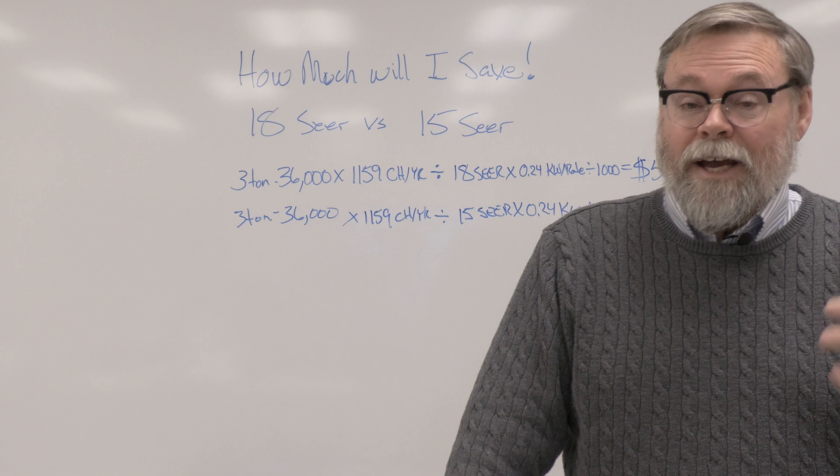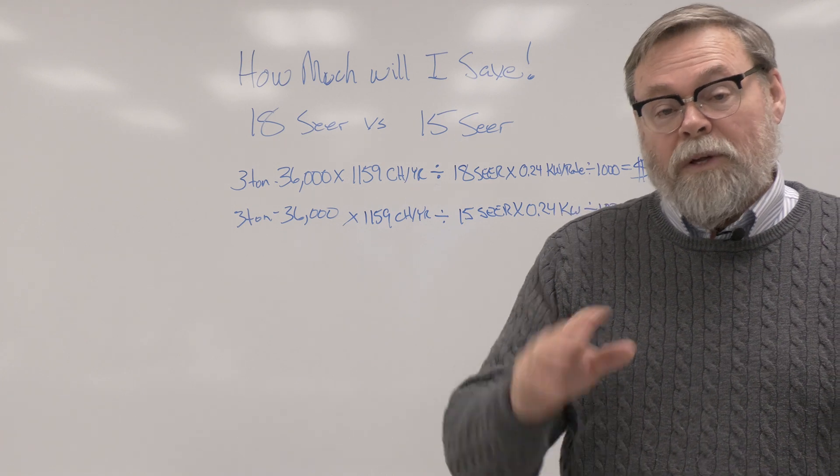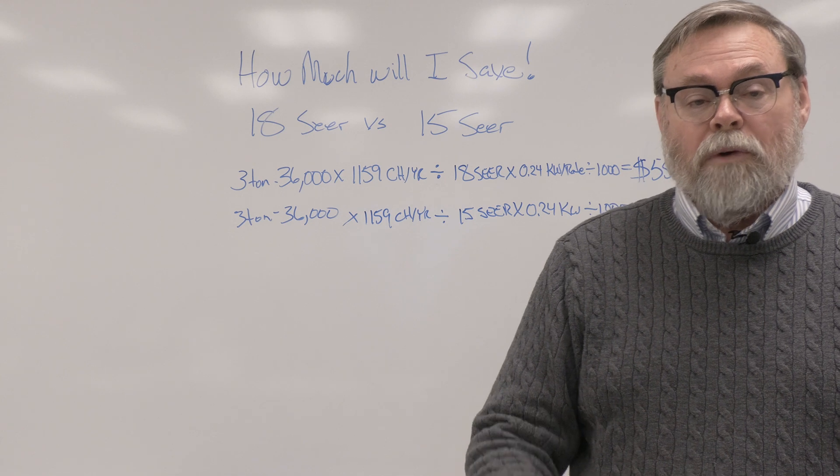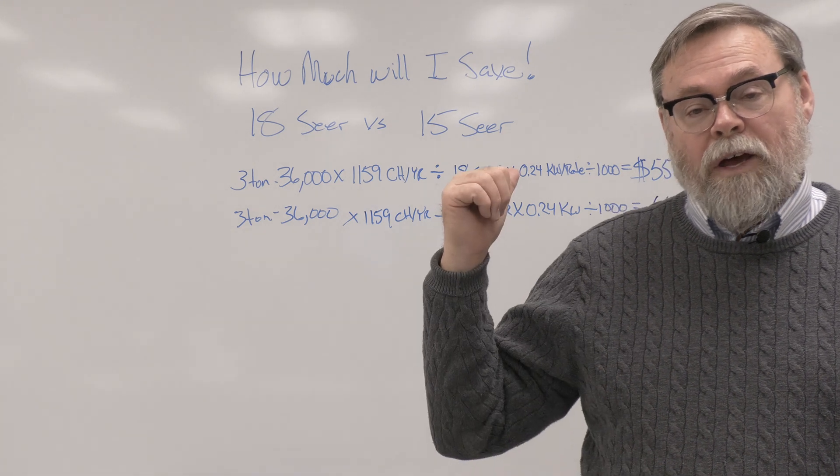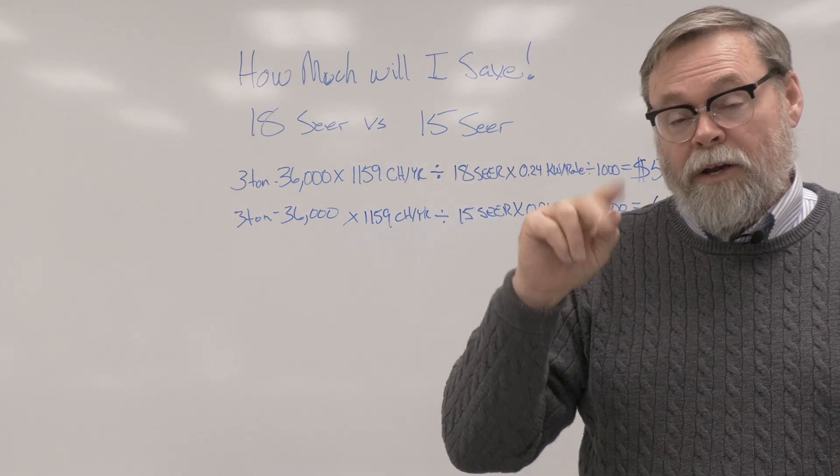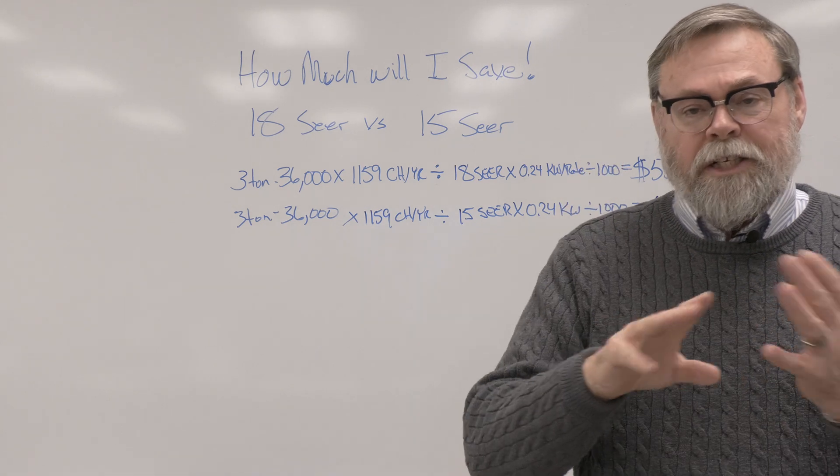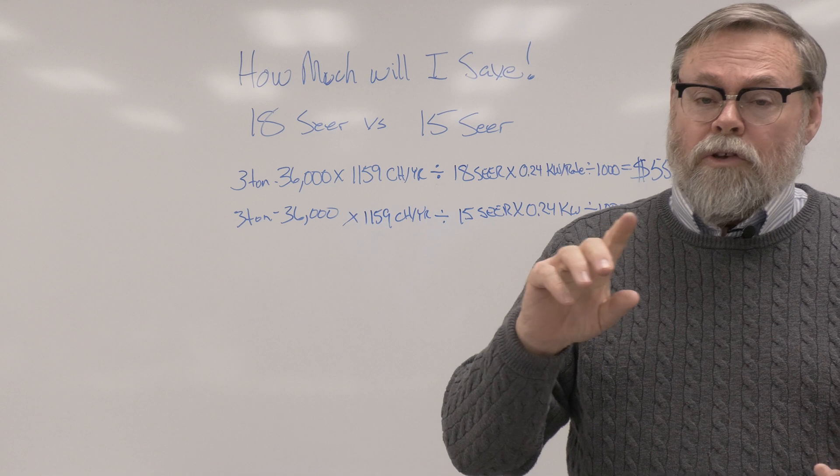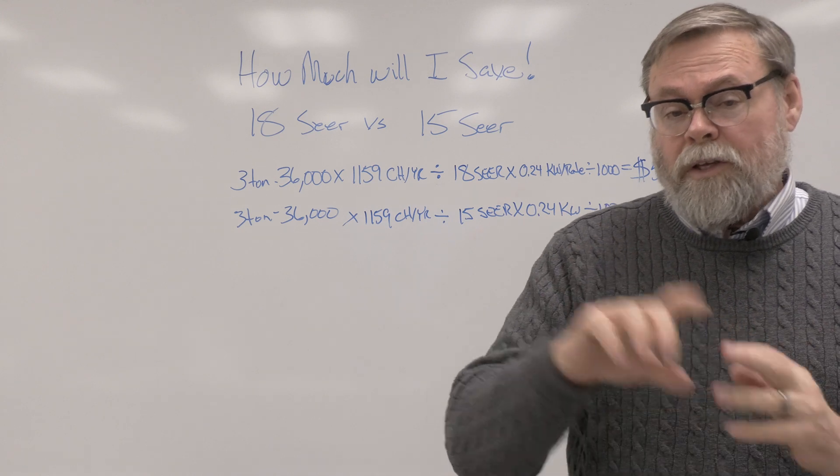Well, there's actually a very easy calculation we can do to give you what the average savings should be between the two systems and what it should cost you to run them. This is an example here in the back of a three-ton unit. All we're changing is we're just doing different SEER ratings from 15 to 18 SEER. So, pretty simple. Let's go over it real quick.